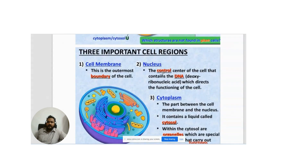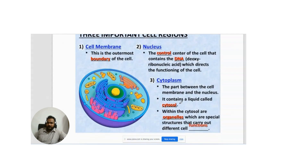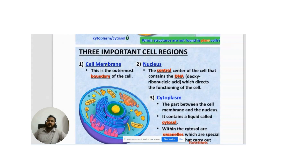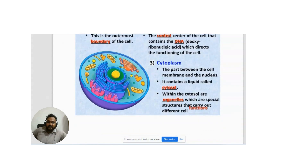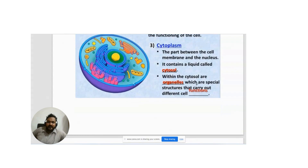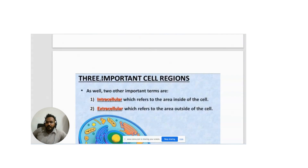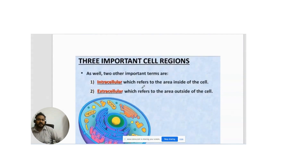Three important cell components common to almost all cell types are the nucleus, cell membrane, and cytoplasm. The cell membrane is the outermost boundary of the cell — it separates the cell's environment from outside to inside. The nucleus is the control center containing genetic material DNA, which directs cell functioning. The cytoplasm is the region between the cell membrane and nucleus, containing the liquid-like cytosol within which organelles are suspended.